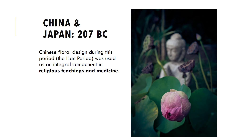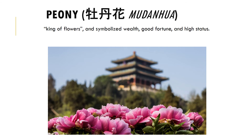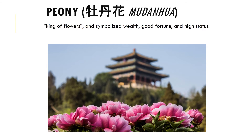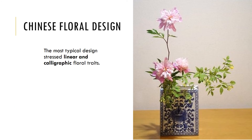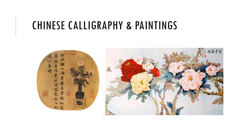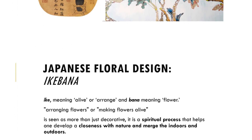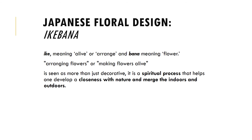In China and Japan, around 207 BC during the Han period, flowers were used in medicine and religious teachings. One of the most important flowers to the Chinese was the mudan wa or peony — considered the king of flowers, symbolizing good fortune and high status. It was used as a woman's herb to regulate the female hormonal cycle and alleviate headaches and stomach pains. Chinese flower arrangement consisted of linear and calligraphic designs, with flowers used even in calligraphy and paintings.